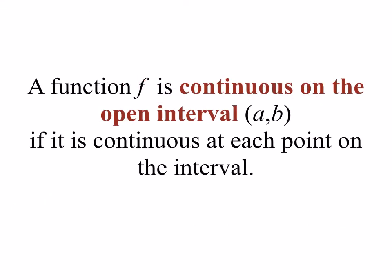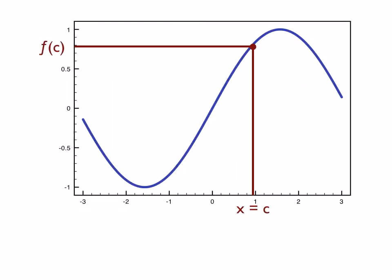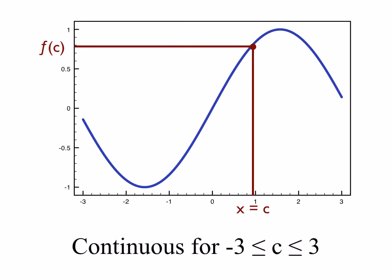What if we wanted to consider whether or not a function was continuous on an interval? A function f is continuous on the interval ab if it is continuous at every point on that interval. Consider again our function sine x: for any value x equals c, the limit as x approaches c will equal the functional value f of c. Intuitively we understand that because there are no breaks in the graph, so this function is continuous on the entire interval from minus 3 to 3.